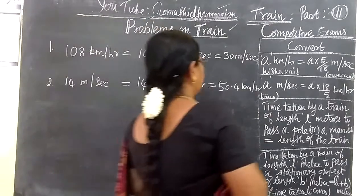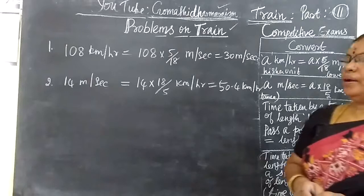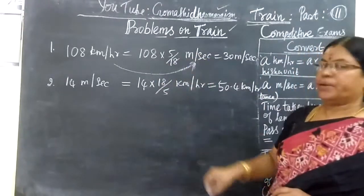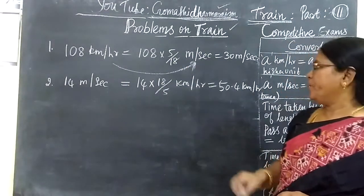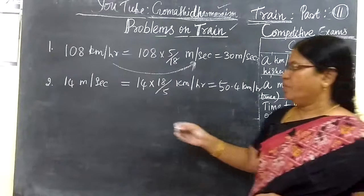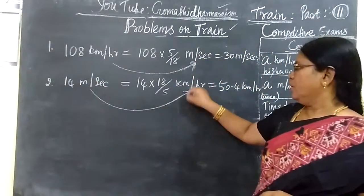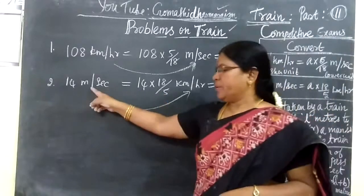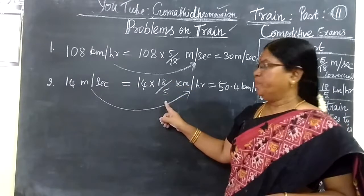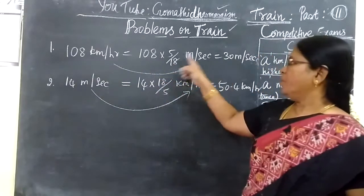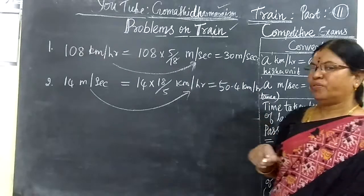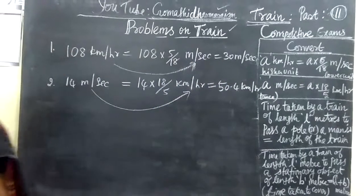Now see this problem. It is given as 108 kilometers per hour. To convert kilometers per hour into meters per second, you multiply by 5/18, giving 30 meters per second. Conversely, if the answer is in meters per second and you need to convert to kilometers per hour — lower unit to higher unit — you multiply by 18/5. So the answer comes to 50.4.